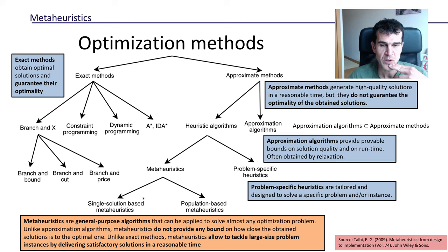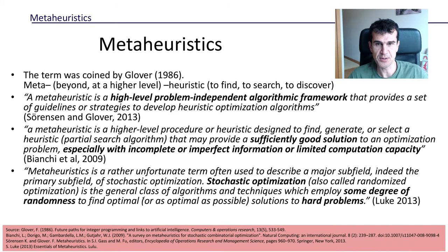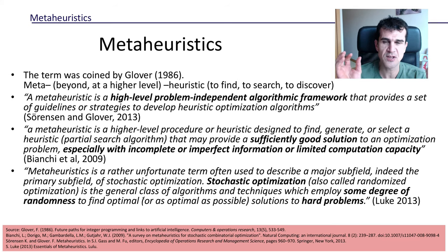These are different definitions that different scholars have given about metaheuristics. Maybe none of them is fully satisfying, but each of them emphasizes some aspect of metaheuristics that is useful to remember. First, the topic was coined by Glover in 1986, and it uses two Greek words. Meta means beyond or at a higher level, and heuristic means in Greek to find, to search, to discover. So this refers to higher level algorithms that are used to optimize something, to find the solution of something.